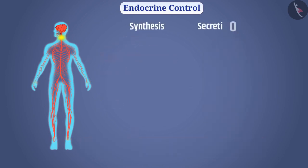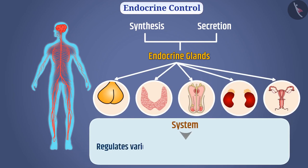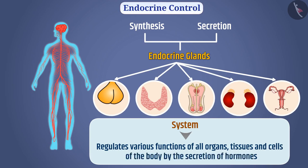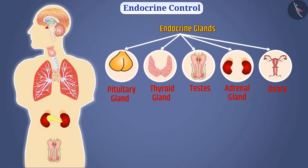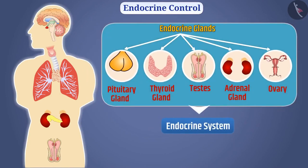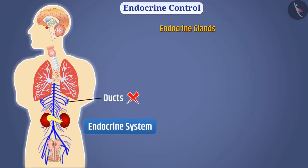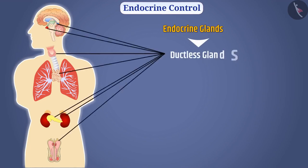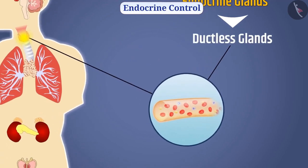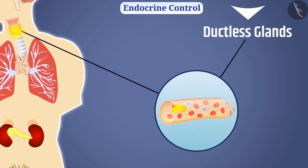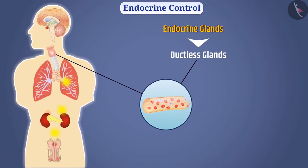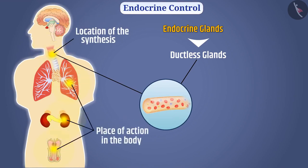Synthesis and secretion of hormones in animals is done by the endocrine glands. The mechanism that regulates various functions of all organs, tissues, and cells of the body by the secretion of hormones is called the endocrine system. All the endocrine glands of the body are part of the endocrine system. The endocrine glands do not have ducts, so they are called ductless glands. The hormones produced by them are secreted directly into the blood, and with the blood, hormones reach all the cells of the body. Therefore, the location of hormone synthesis and the place of action in the body are different.